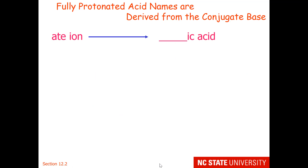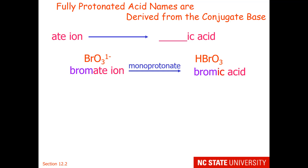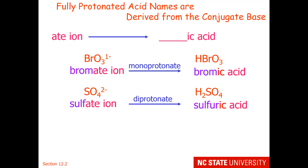If the ion has an '-ate' ending, then it becomes an '-ic acid'. For example, the bromate ion, when you monoprotonate it, becomes bromic acid. The sulfate ion, when we diprotonate it to the neutral species, becomes sulfuric acid.